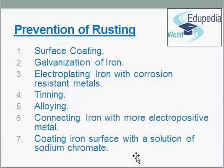Sixth, connecting iron with a more electropositive metal. Iron is protected from rusting by connecting it with a more electropositive metal such as magnesium. Since magnesium is more electropositive than iron, it becomes the anode and gets oxidized, protecting iron which acts as a cathode from rusting. This method is known as cathodic protection. Seventh, coating iron surface with a solution of sodium chromate.